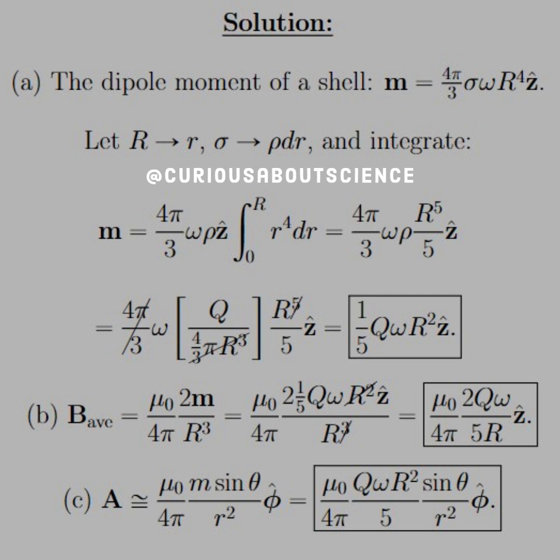If we let big R go to little r and sigma go to rho dr, since it's solid, and we integrate this out, we see that we have M equal 4 pi over 3 omega rho Z hat. And we integrate from 0 to capital R of little r to the fourth dr. Pretty simple integral there.